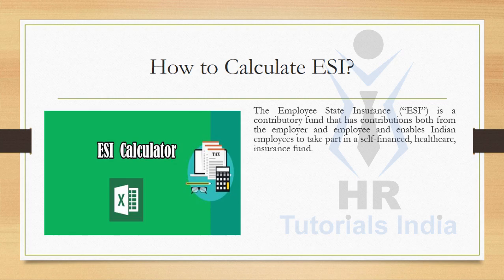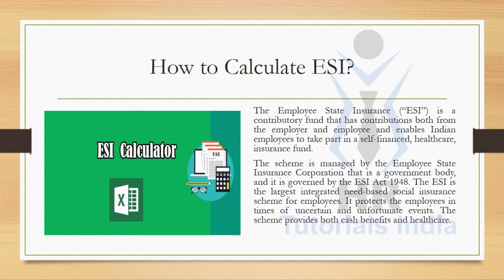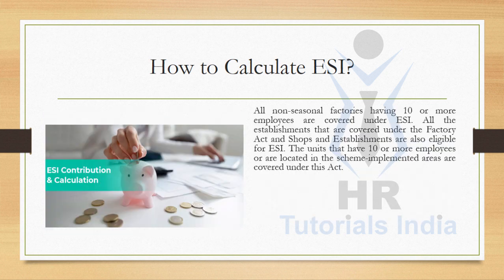ESI stands for Employee State Insurance, which is a contributive fund consisting of both employer and employee contributions for self-finance healthcare and insurance. The scheme ESI is managed by ESIC, which is Employee State Insurance Corporation, and is governed by ESI Act 1948, the largest integrated need-based social insurance scheme for employees. This scheme protects employees in uncertain and unfortunate situations by providing cash benefits and healthcare benefits. Both factories and shop establishments having 10 or more employees are covered under ESI and eligible to avail its benefits.